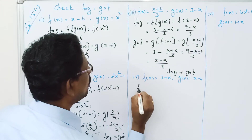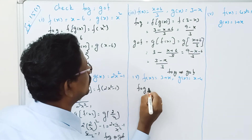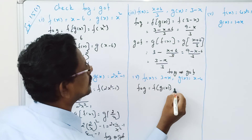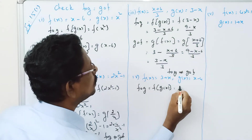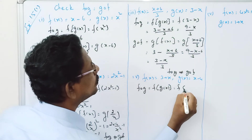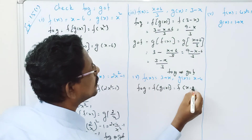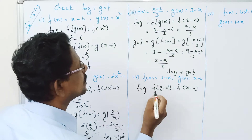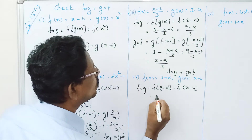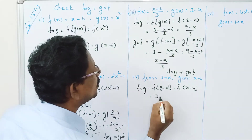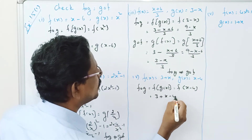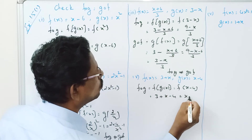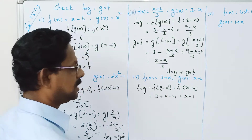F composition G — F of G of X — where G of X equals X minus 4. That is F of X minus 4, which equals 3 plus X minus 4, giving X minus 1.